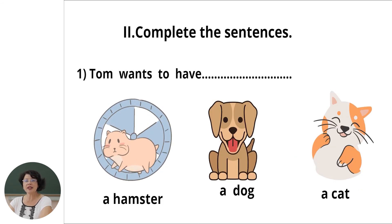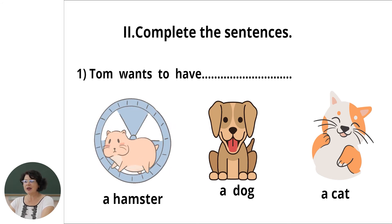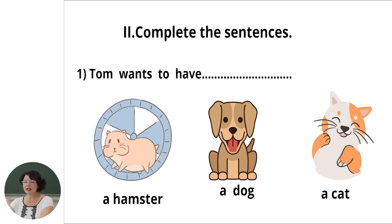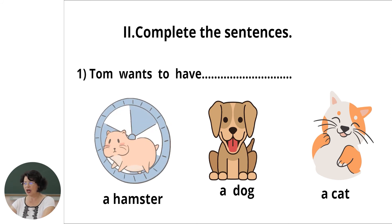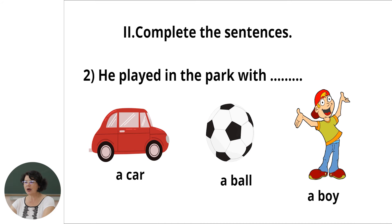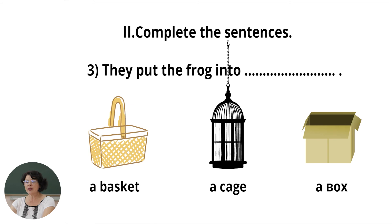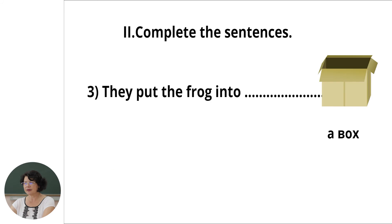Now let's complete some sentences about Tom. I hope you liked the adventure. Tom wants to have a hamster, a dog, or a cat? Tom wants to have a dog. He played in the park with a car, a ball, or a boy? He played in the park with a boy — it was his friend. They put the frog into a basket, a cage, or a box? They put the frog into a box.